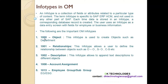Info type 1002 is used to append text descriptions to different objects. We also have info type 1008, which is 'Account Assignment'. The purpose of this is to store account-relevant data such as personal area, company code, sub area, and other particular fields.